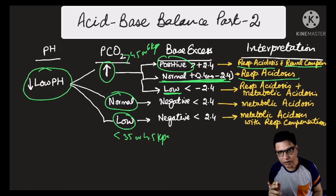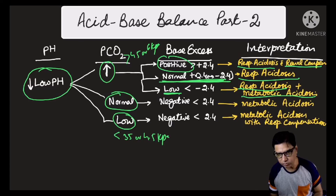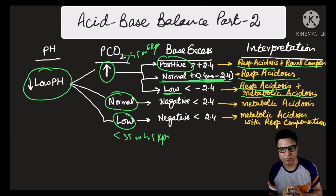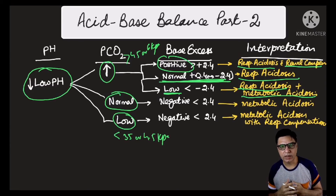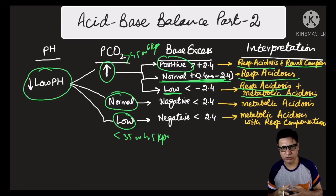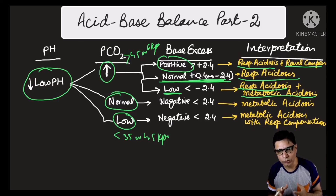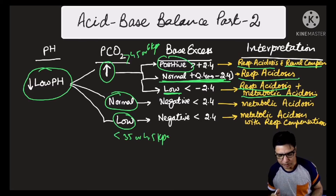If you get a high pCO2 and a low base excess — a base deficit less than minus 2.4 — then you have a dual disorder: both respiratory acidosis and metabolic acidosis occurring simultaneously. Something is wrong with the lungs and also with the renal or gastrointestinal system. So this is a respiratory plus metabolic acidosis — a combined dual disorder.